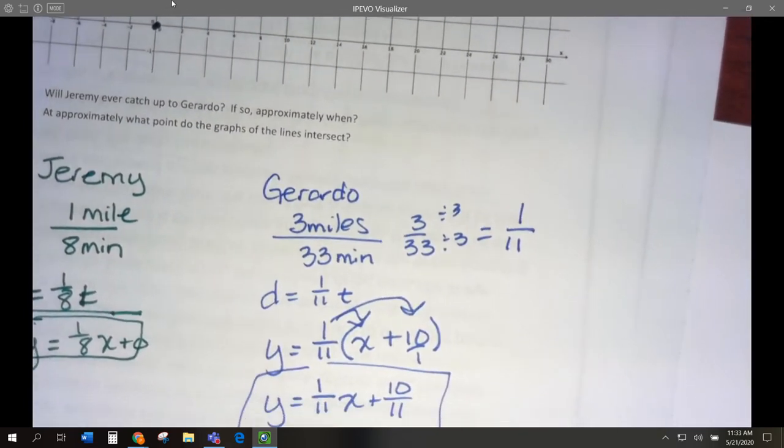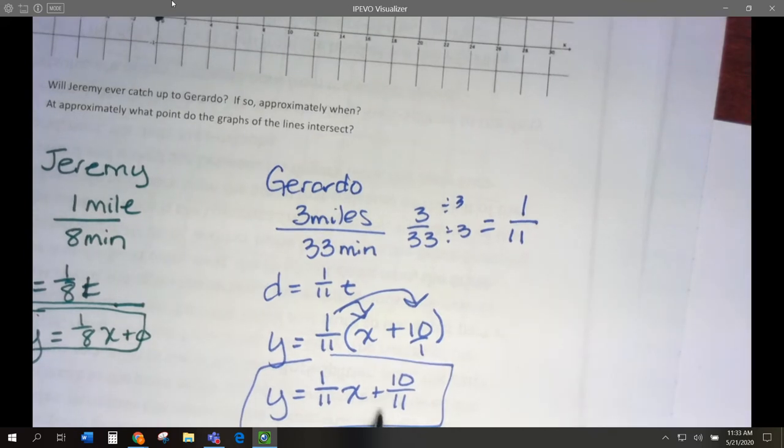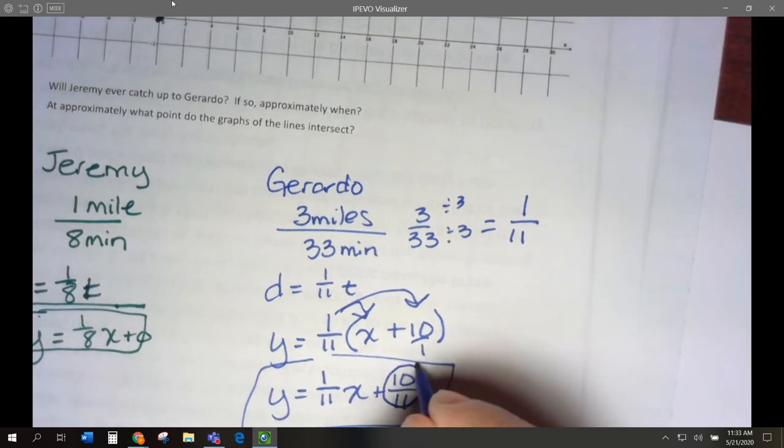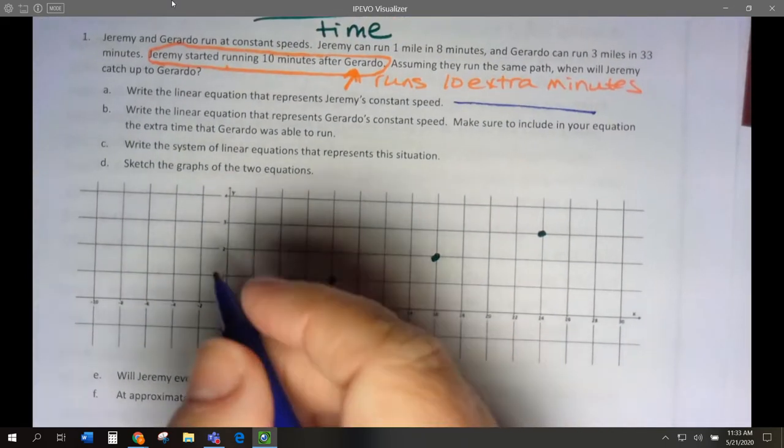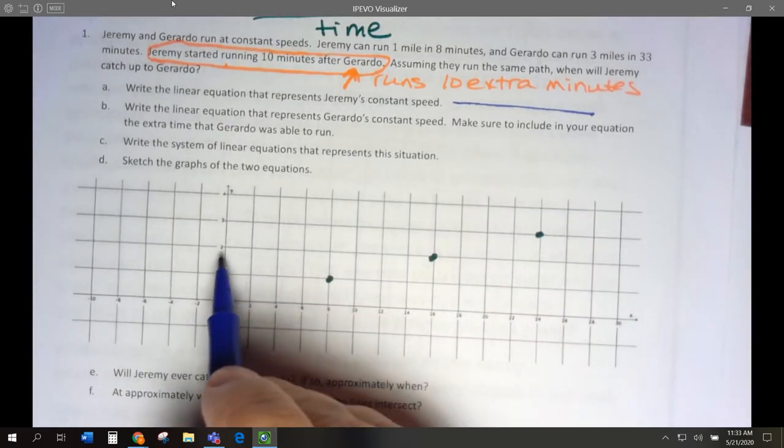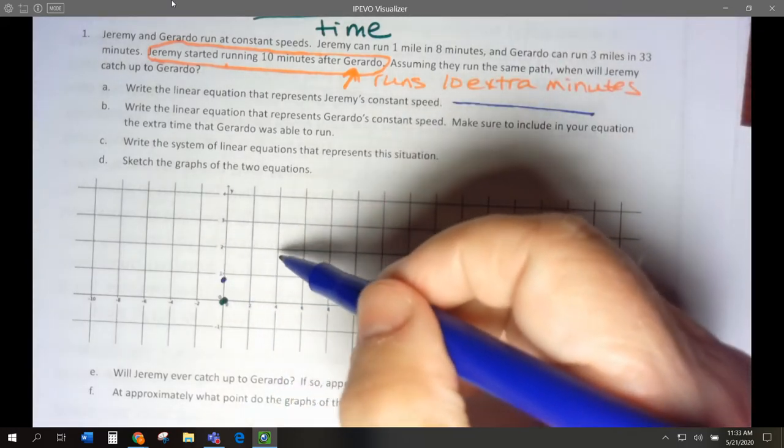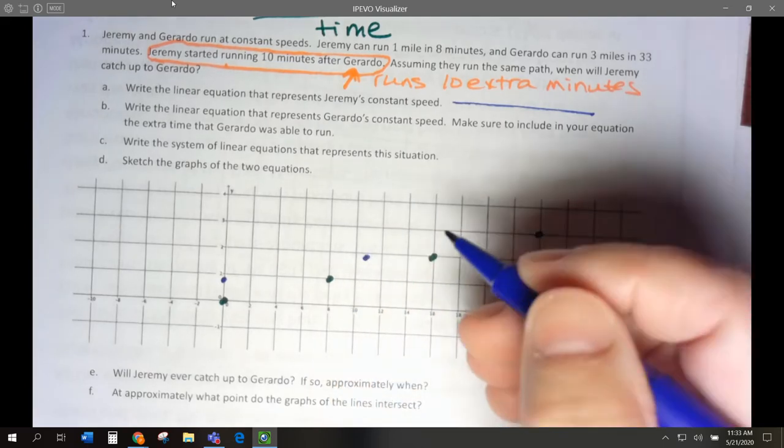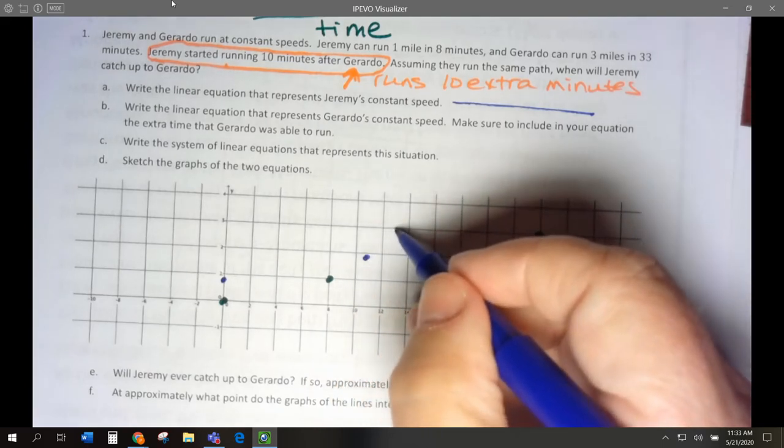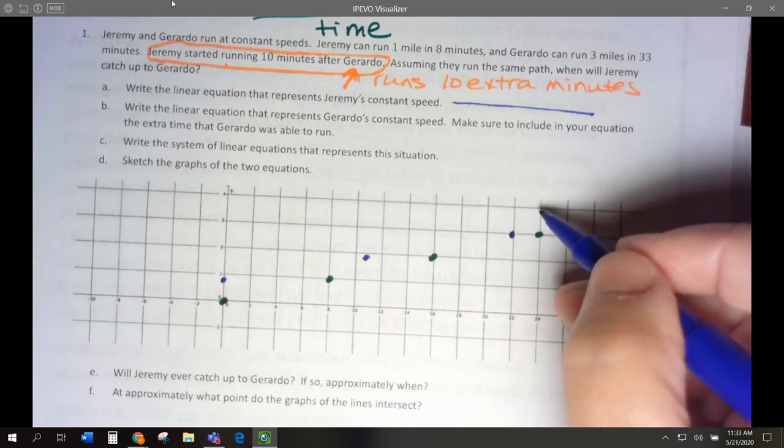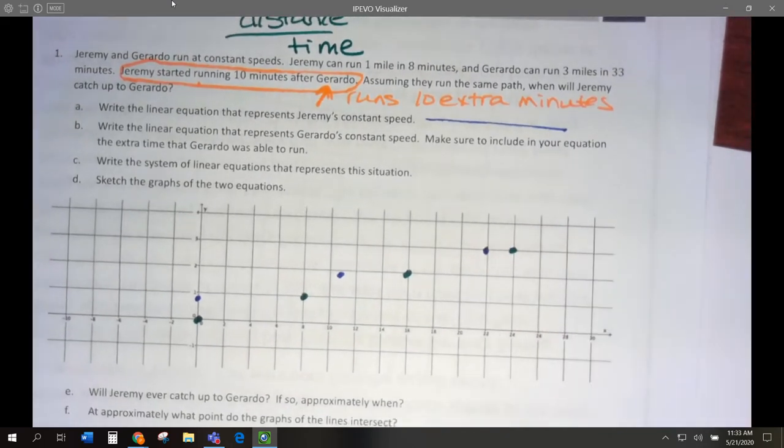For Gerardo, we cross at plus 10 elevenths. So this is going to be our y intercept. This is just under 1, isn't it? This is just under 1. And then we're going to go up 1 and over 11. 2, 4, 6, 8, 10, 11. Go up 1, 2, 4, 6, 8, 10, 11. Up 1, 2, 4, 6. Okay, so it's going to be like this.